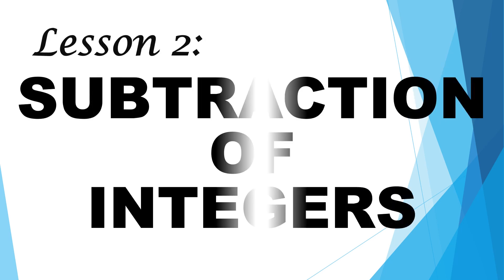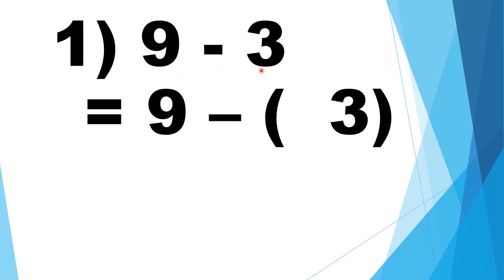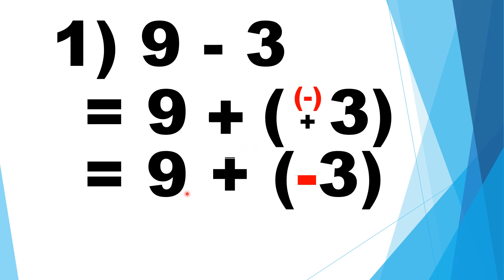Lesson 2: Subtraction of integers. Change the sign of the subtrahend, then proceed to the rules of addition of integers. Number 1: positive 9 minus positive 3. Change the sign of the subtrahend — positive to negative. Then proceed to addition: 9 plus negative 3 is equal to positive 6.